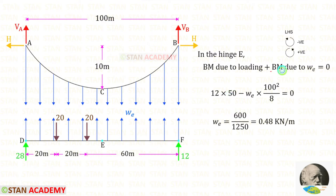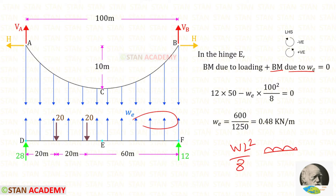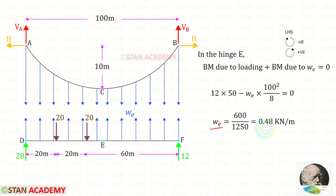For the bending moment due to WE we can use the formula from the simply supported beam. In the simply supported beam, if the uniformly distributed load is acting for the full span, the formula to find the bending moment at the center is WL squared upon 8. But the load will be acting downwards; here the load is acting upwards, so the moment should be negative. Here W is WE and L is 100. Finally we will get WE equal to 0.48 kN per meter.